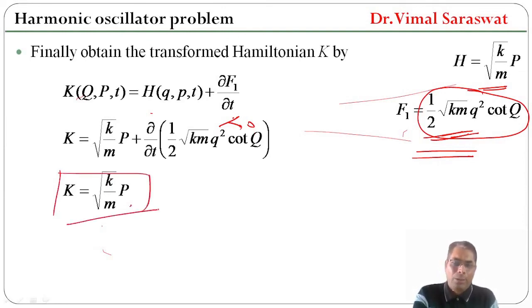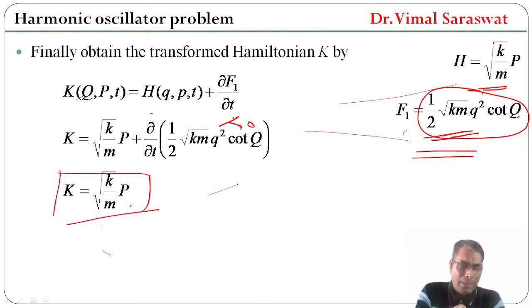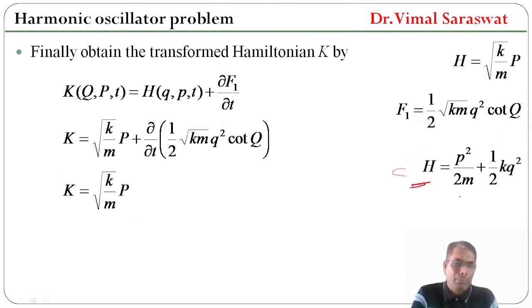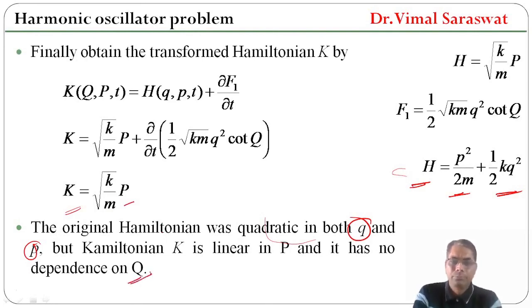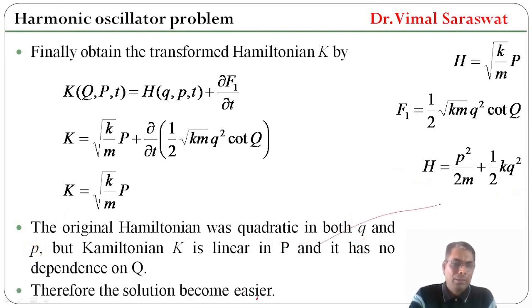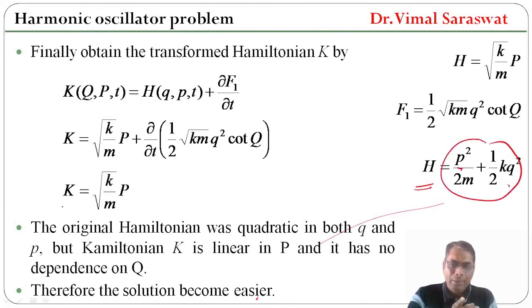We have also proved that if the generating function F1 does not explicitly depend on time, there will be no change in the Hamiltonian, meaning the transformed Hamiltonian and original Hamiltonian will be the same. The original Hamiltonian H was quadratic in both q and p, but the transformed Hamiltonian K is linear in P and has no dependence on capital Q. Hence the solution becomes much easier.